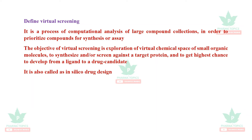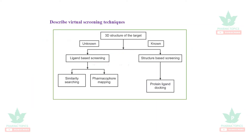Virtual screening is also called in silico drug design. It is of two types: ligand-based screening and structure-based screening. If the target protein is unknown, you go with ligand-based screening, which is subdivided into similarity searching and pharmacophore mapping. If the target protein is known, you go for structure-based screening, also called protein-ligand docking.